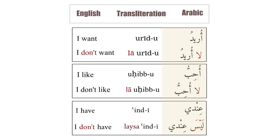Let's summarize what we have learnt. أريد — 'I want.' لا أريد — 'I don't want.' أحب — 'I like.' لا أحب — 'I don't like.' عندي — 'I have.' ليس عندي — 'I don't have' — it's not in my possession.